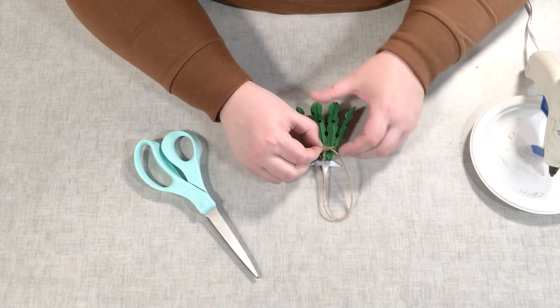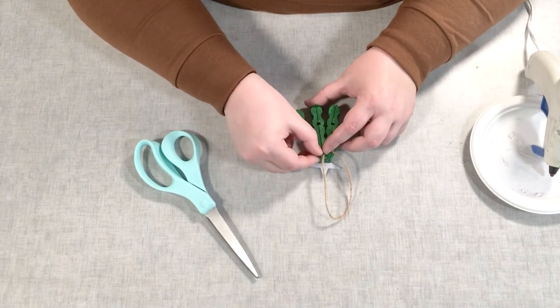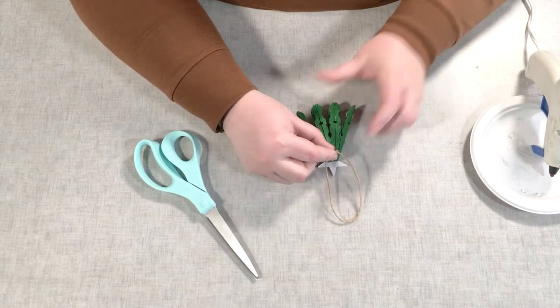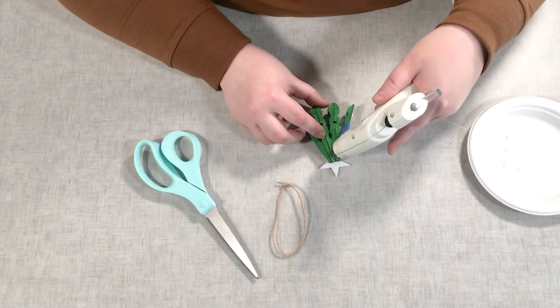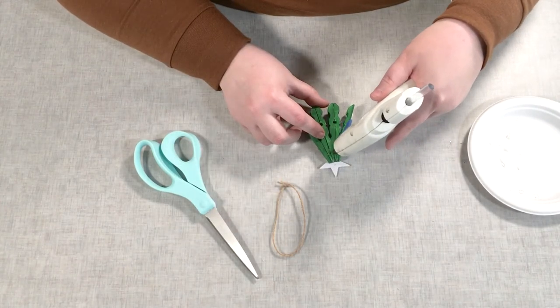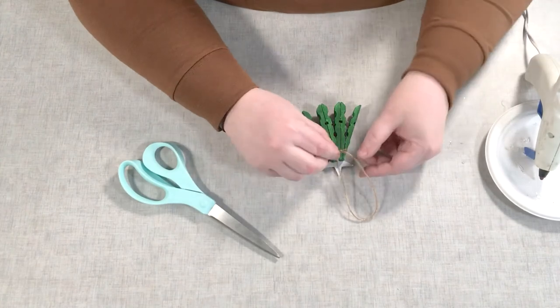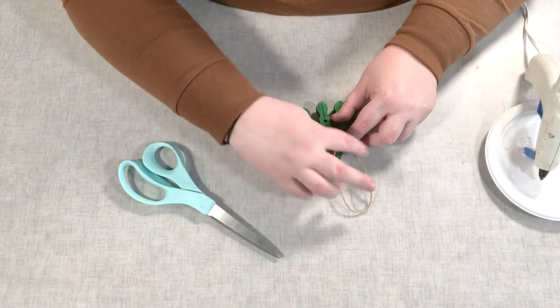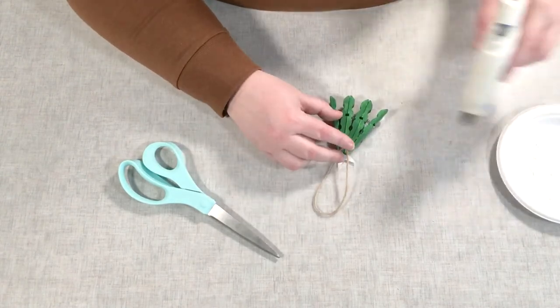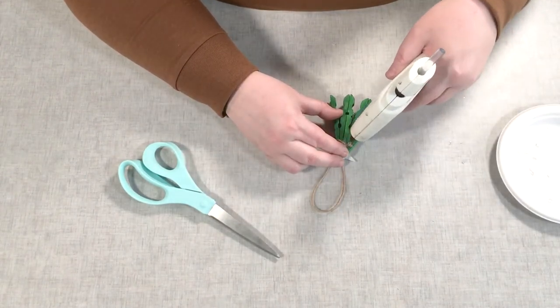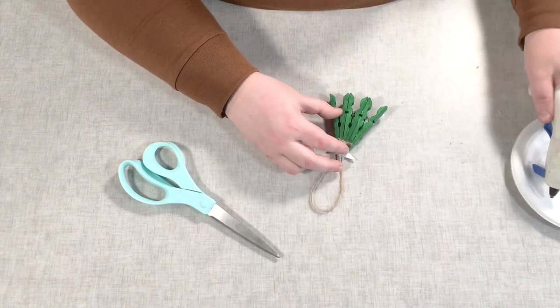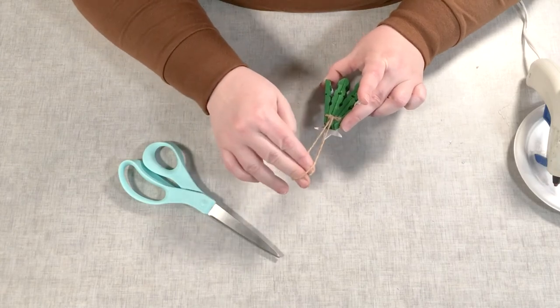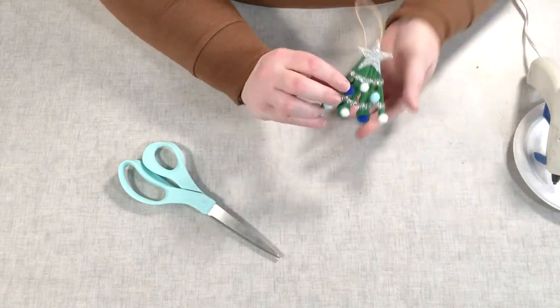And then I'm just going to glue it right here, kind of near the top, in the top section of the tree on the back. So I'm just going to put a little bit of glue right there. And put that knot on and press it down to secure it. If it still feels a little loose, you can hit it with a little bit more glue. And there you have it. Your clothespin holiday tree ornament.